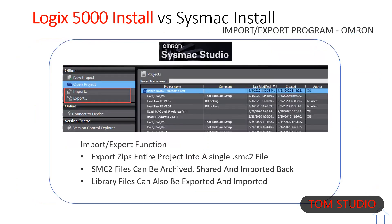Sysmac Studio's import and export tool is very different than Rockwell. To save the project as a Windows file you need to export. No need to import to open — just double-click the SMC2 file in Windows. If Sysmac Studio is already open, double-clicking an SMC2 in Windows opens a second instance of Studio.